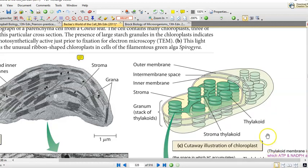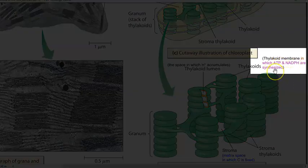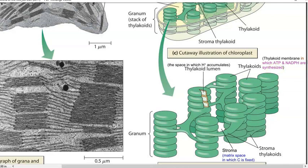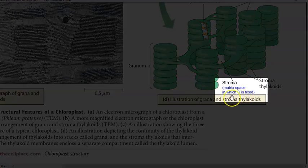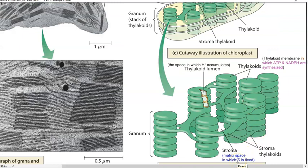This image explains the various structures of the chloroplast. Thylakoid membranes are the locations at which ATP and NADPH are synthesized - that is the process of photophosphorylation. In the stroma matrix space, carbon is fixed - carbon dioxide is converted into cellular carbon. The thylakoid lumen is the intermembrane space in which protons accumulate due to the operation of the electron transport chain. That proton gradient fuels the ATP synthase pump, similar to that of the mitochondria.